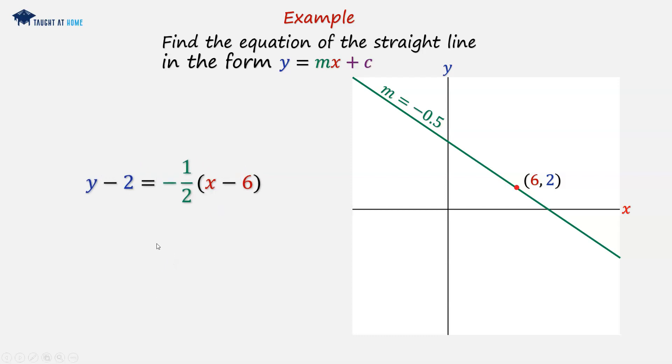And now we can do as before, multiply out the brackets on the right hand side of this equation. So we've got minus half times x is minus a half times x, and we can multiply a half by 6. And what we're left with here is we've got 2 negatives. So 2 negatives become a positive, and 6 over 2 is 3.